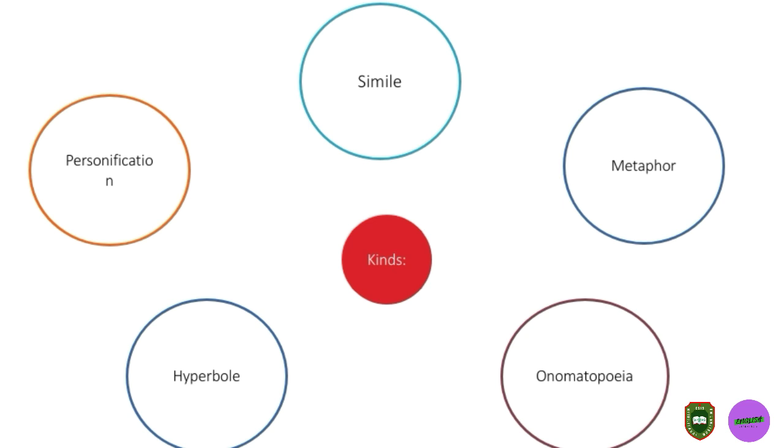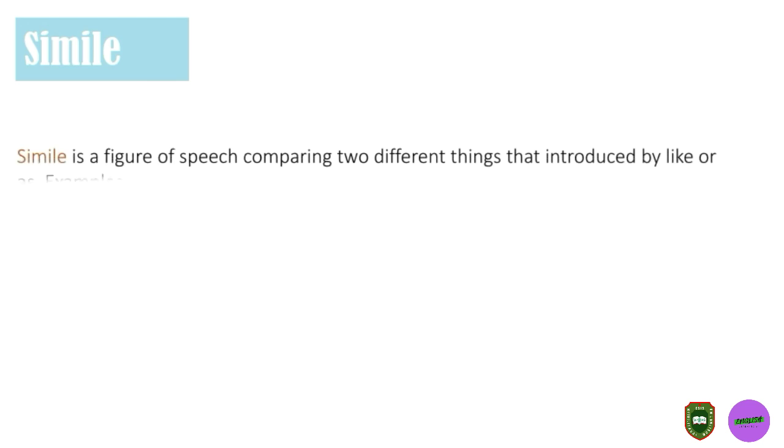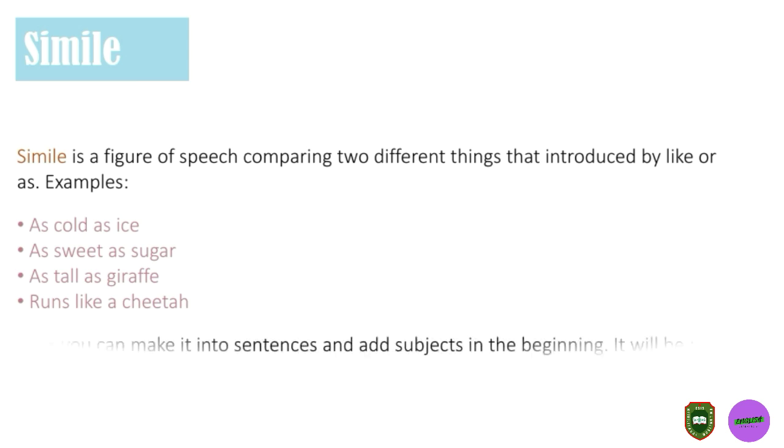Then we will start from simile. Simile: A simile is a figure of speech comparing two different things that are introduced by 'like' or 'as'. For example: as cold as ice, as sweet as sugar, as tall as a giraffe, runs like a cheetah. P.S. You can make it into a sentence and add subjects in the beginning. It will be 'He runs like a cheetah.'